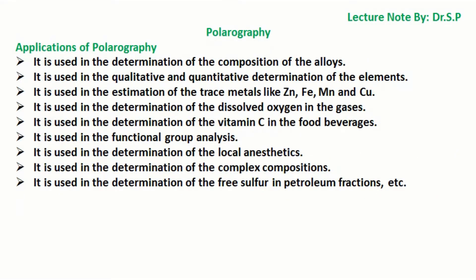Applications of polarography: it is used in the determination of the composition of alloys, and in the qualitative and quantitative determination of elements. It is used in the estimation of trace metals like zinc, iron, manganese, and copper. It is used in the determination of dissolved oxygen in gases, vitamin C in food beverages, and functional group analysis. It is used in the determination of local anesthetics, complex compositions, and free sulfur in petroleum fractions.